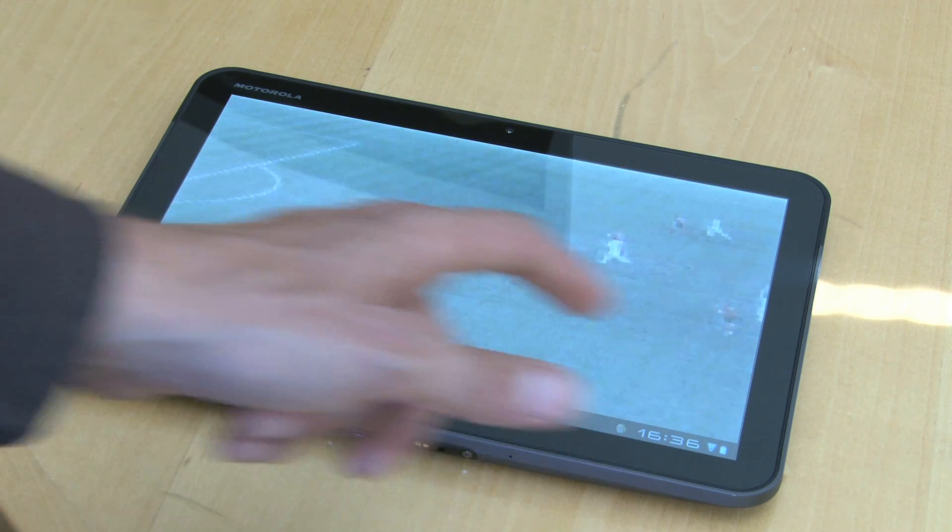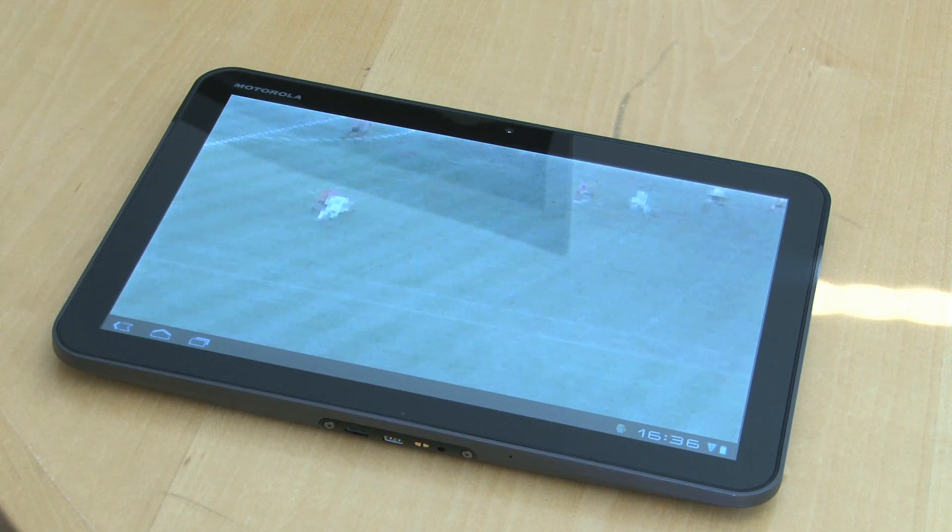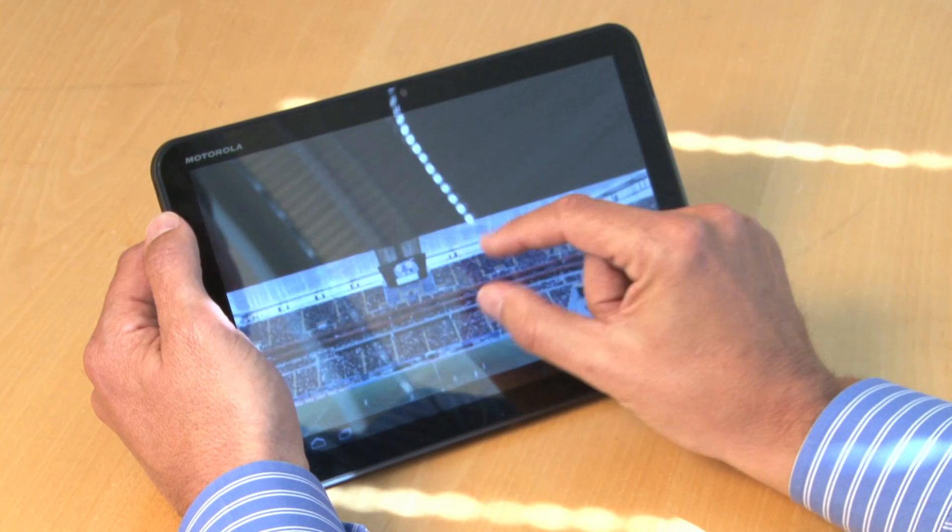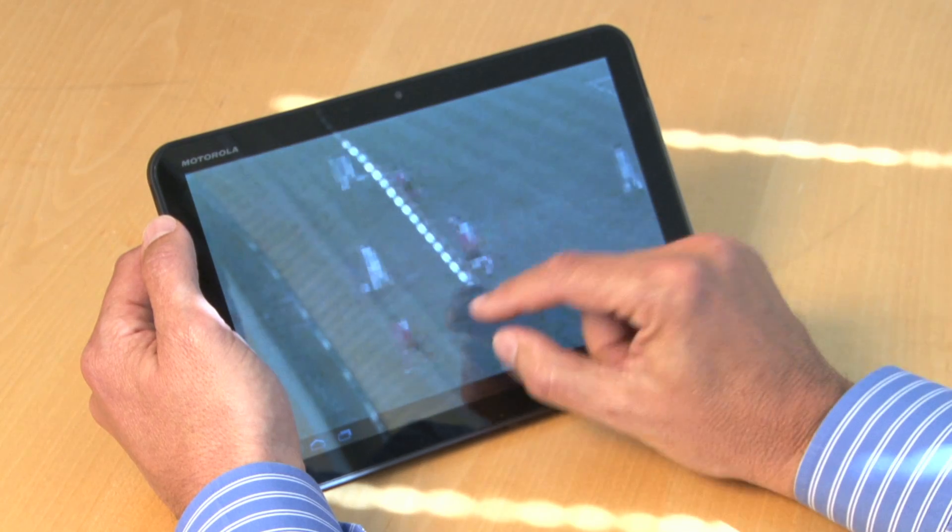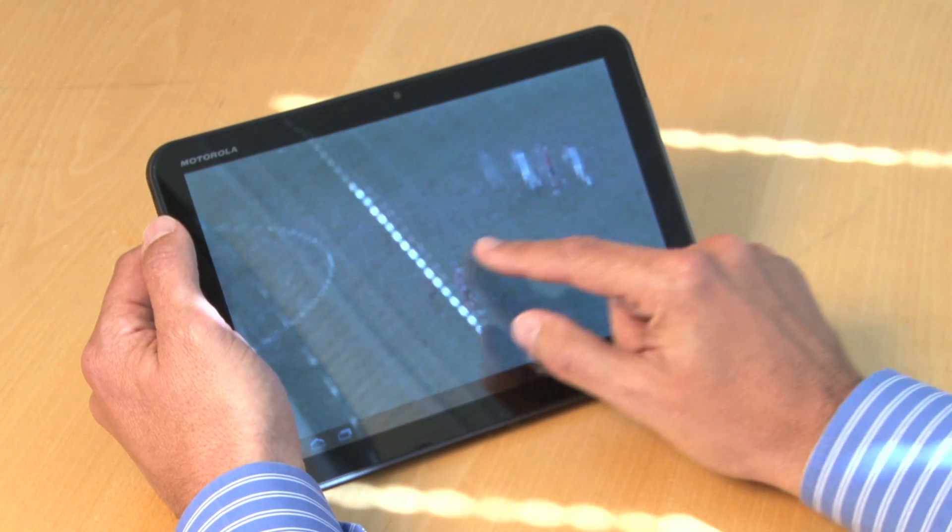So here we have a soccer game recorded with a very high resolution camera. Score is still 0-0. So here on the tablet we can now just zoom in by finger gestures and then pan to follow the game. Oh, it was a goal.